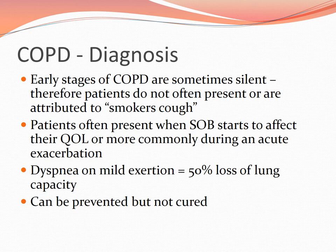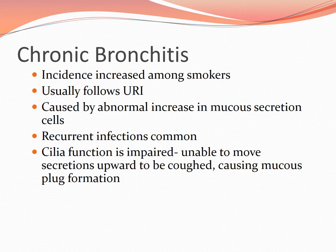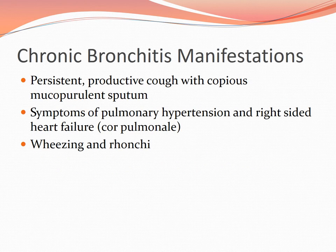Chronic bronchitis incidence increases among smokers and usually follows upper respiratory infection. It is caused by an abnormal increase in mucus secretion; cilia are impaired and unable to move secretions upward to be coughed out, causing mucous plug formation. Patients have persistent productive copious mucopurulent sputum. Symptoms of pulmonary hypertension and right-sided heart failure can occur. Emphysema is characterized by destruction of the walls of the alveoli with resulting enlargement of abnormal air spaces, leading to loss of alveolar surface for gas exchange.